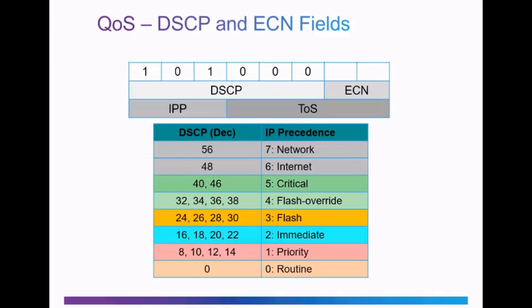DSCP and ECN map directly over the 8 bits of the IPP and TOS fields, and the DSCP field is backwards compatible with the IPP field. For example, an IPP classification of 5 uses the relevant bits — with 3 bits that would be a 4 and a 1, which equals 5, signaling a critical flow. Under the DSCP specification, you have 6 bits, where 32 plus 8 equals 40, so a value of 5 under IPP using 3 bits maps to 40 using DSCP with 6 bits. Since DSCP uses 6 bits, there are 64 possible classifications of traffic.